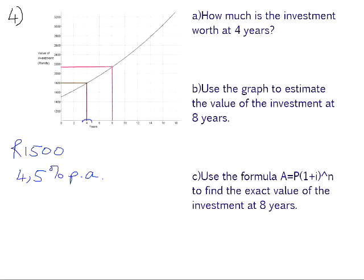So you read 4 off of the horizontal axis, read up to the graph and across, and it is worth 1,800 rand at 4 years.